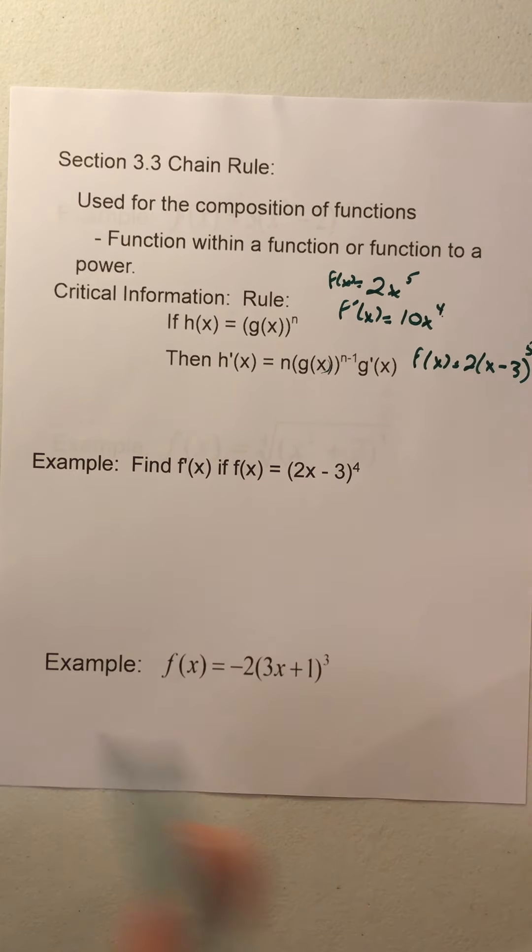So here we're going to multiply that exponent, 3 to the -2, gives us -6. That quantity there is not going to change, 3x plus 1. We're going to decrease the exponent by 1, which gives us 2. And then the derivative of the function, don't forget that fourth piece to this chain rule. Derivative of 3x plus 1 gives us 3.